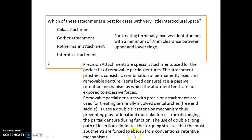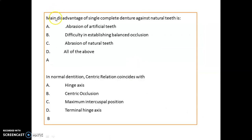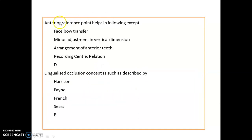They also eliminate the torquing stresses that abutments are forced to absorb from conventional retentive mechanisms. The main disadvantage of a single complete denture against natural teeth is abrasion of artificial teeth. Remember: centric relation coincides with centric occlusion in normal dentition.